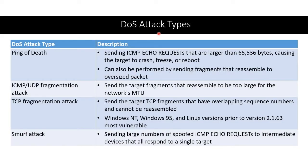Here are different denial of service attack types. There's the ping of death — not because we're pinging too much, but because we're sending ICMP echo requests that are too big, usually sent in fragments. When the other end tries to reassemble the fragments, they turn out to be oversized, causing the target to crash, freeze, or reboot. We could also send lots of fragments not just with ICMP, but with UDP and TCP as well.